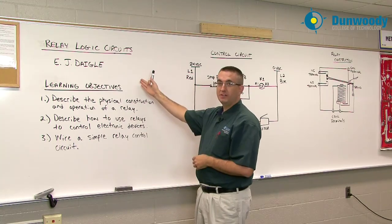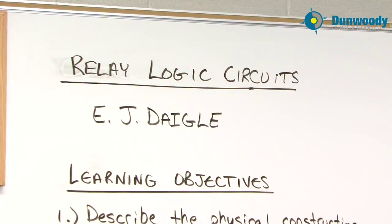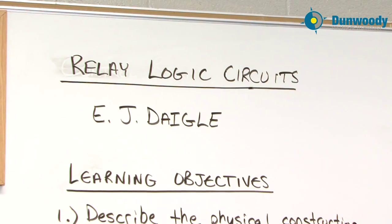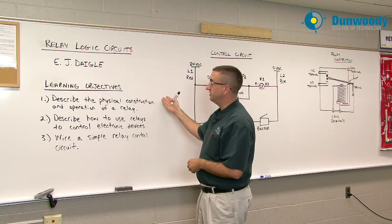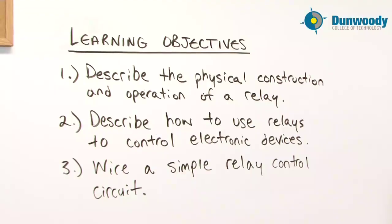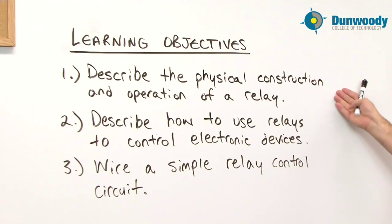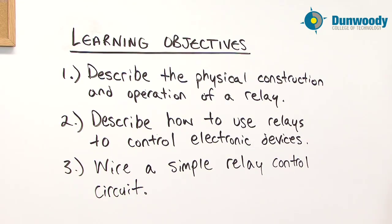Some topic learning objectives that I'd like to cover today. First, upon successful completion of this topic, a trainee should be able to describe the physical construction and operation of a relay. The trainee should be able to describe how to use relays to control electronic devices and the trainee should be able to wire a simple relay control circuit.